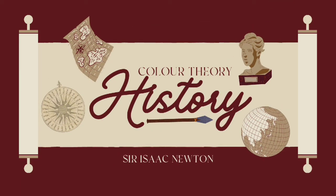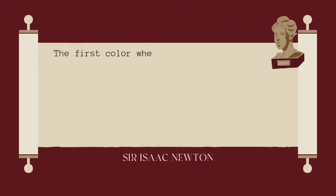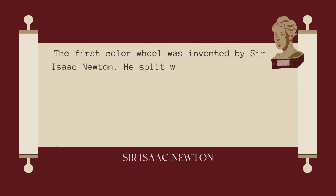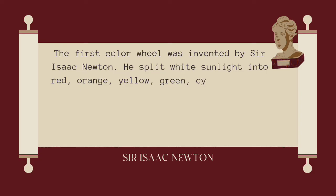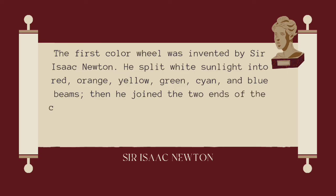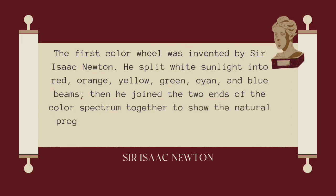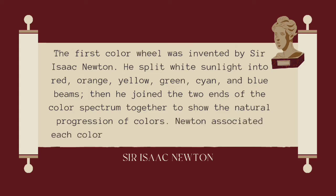Let's talk about the color theory history. The first color wheel was invented by Sir Isaac Newton. He split white sunlight into red, orange, yellow, green, cyan and blue beams, then joined the two ends of the color spectrum together to show the natural progression of colors. Newton associated each color with a note of a musical scale.